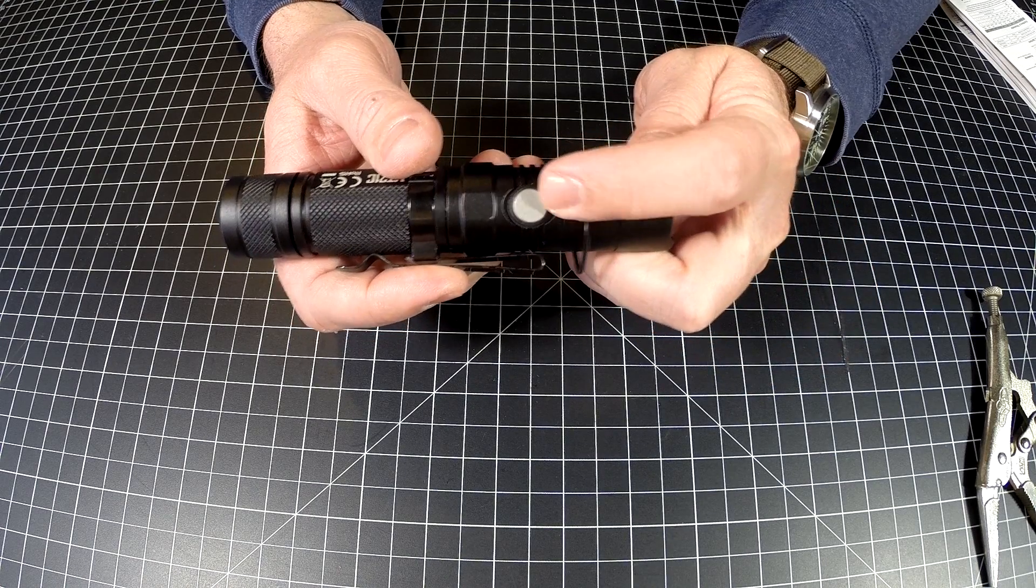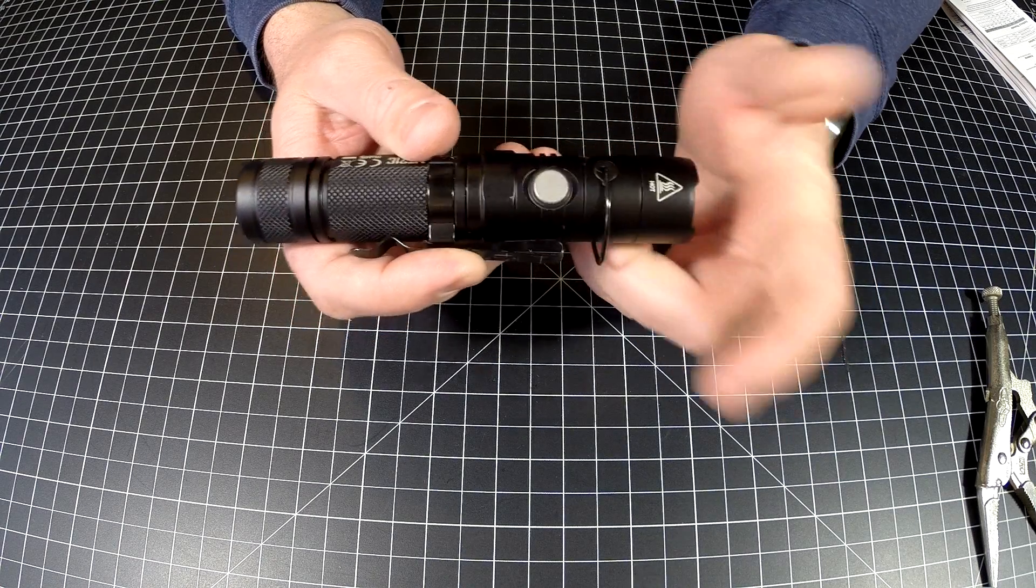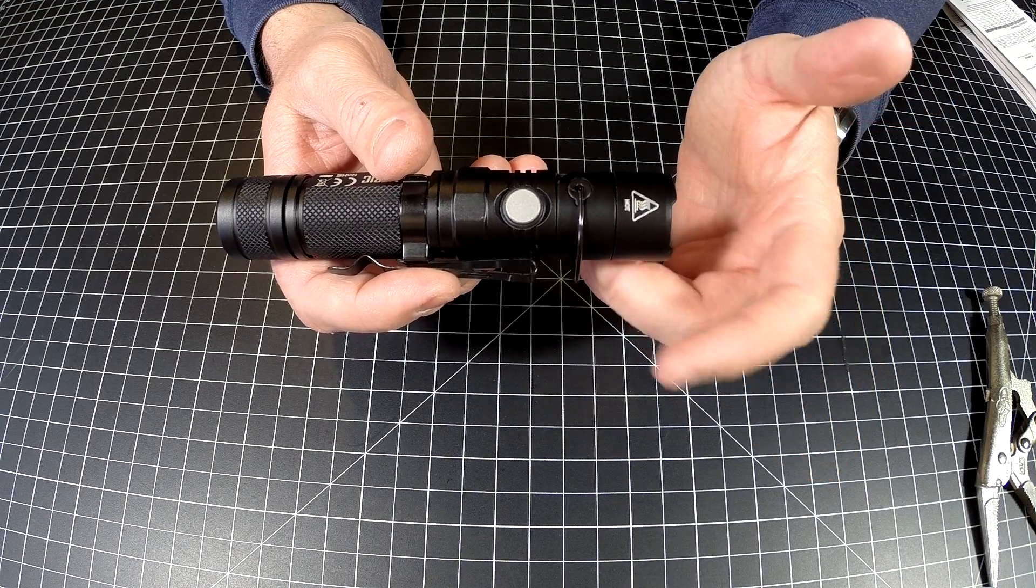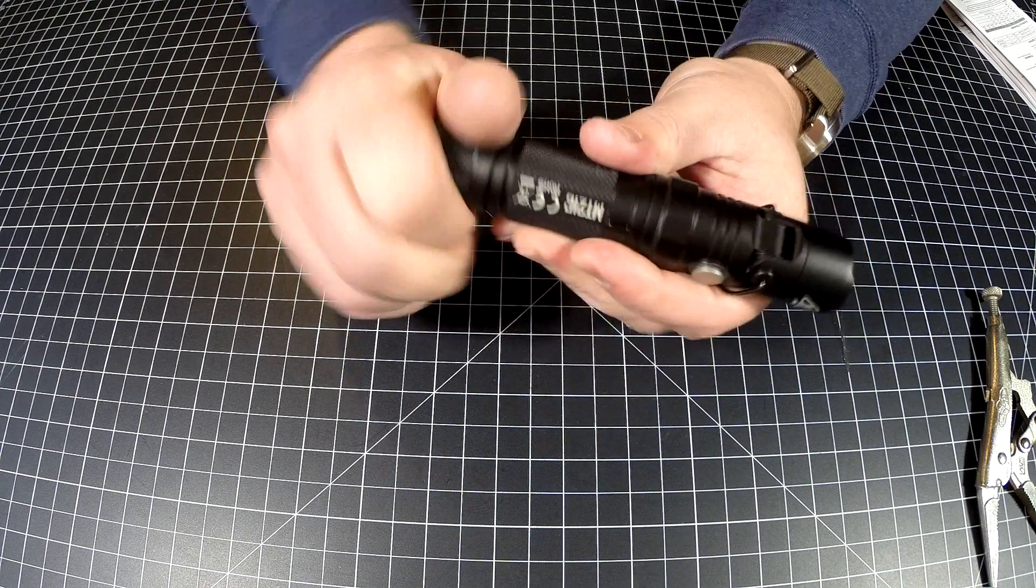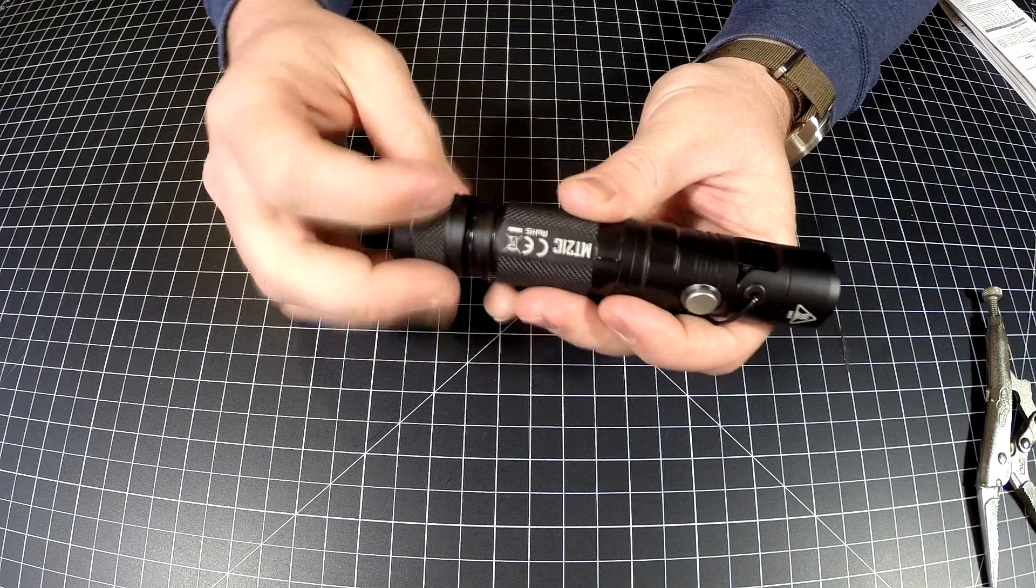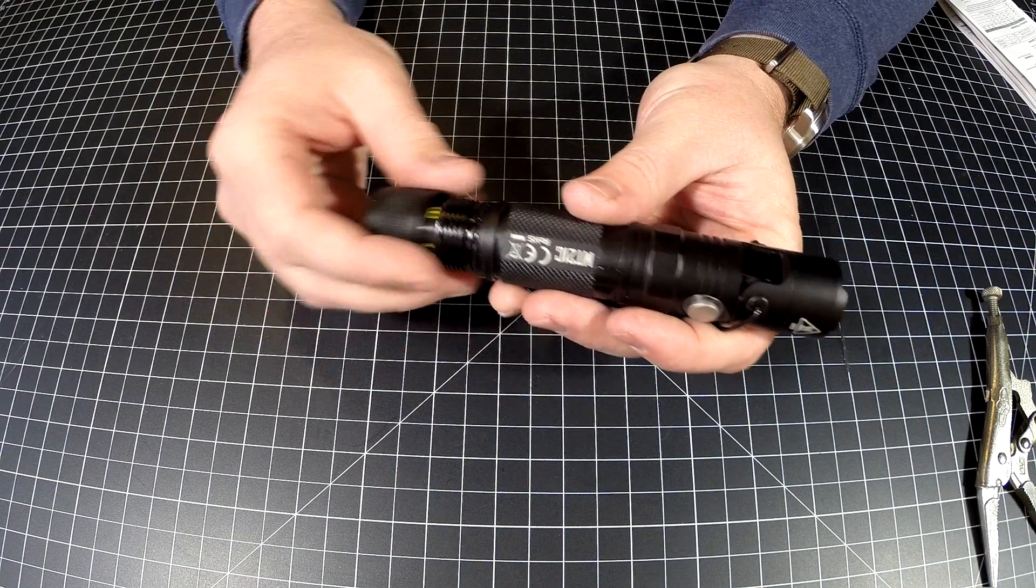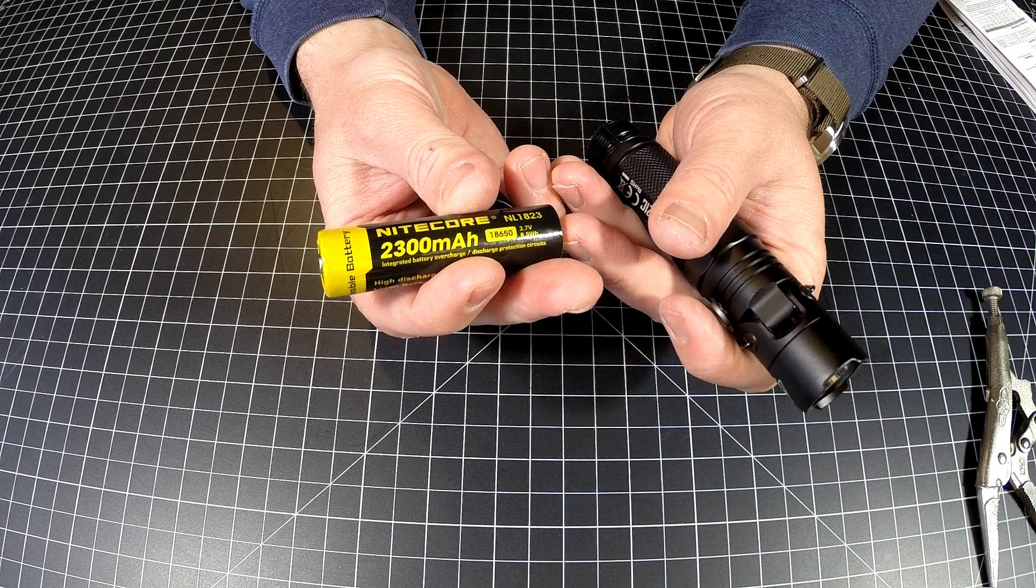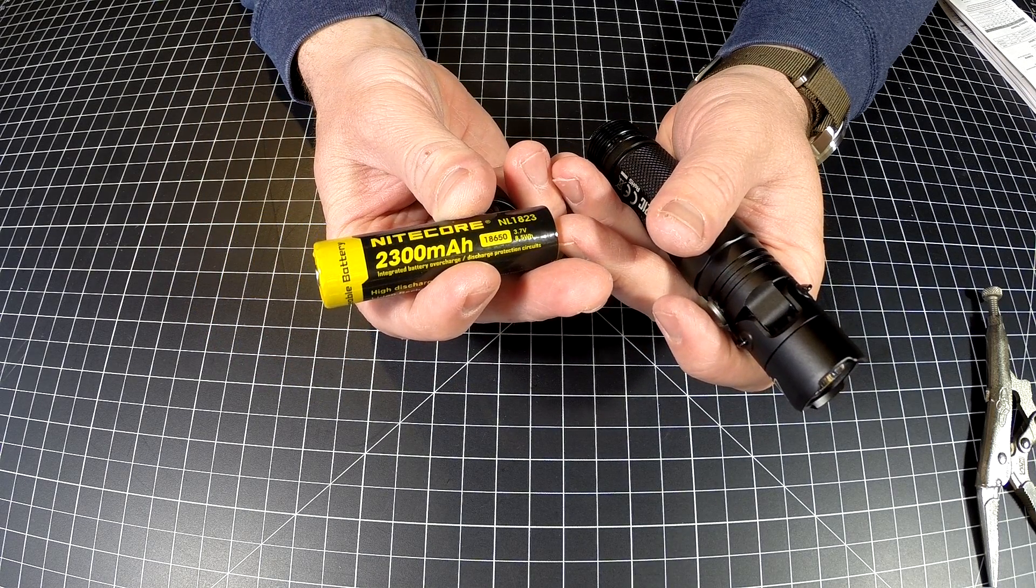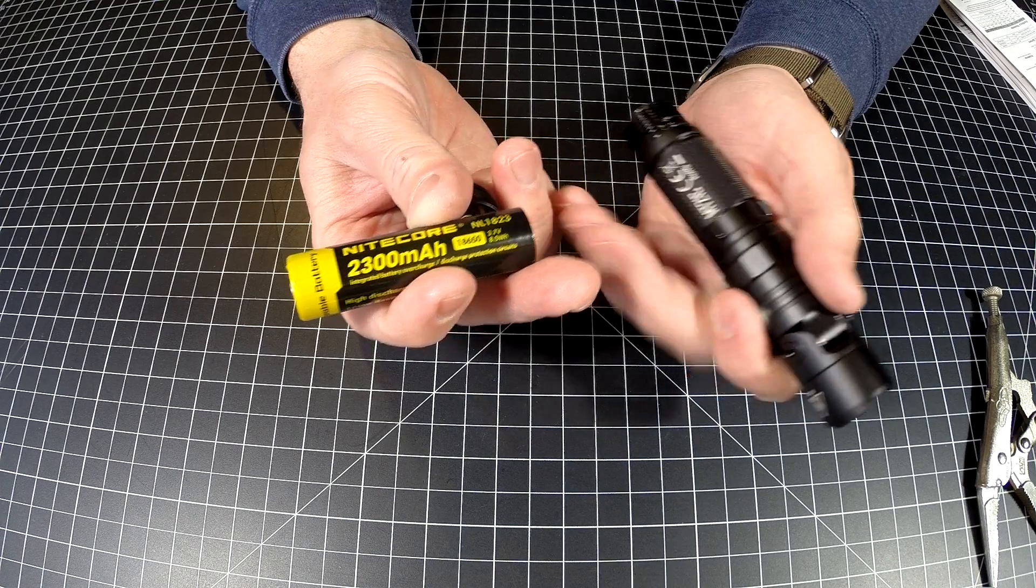Mine didn't come with a battery, so I tossed in my Nitecore 2300 milliamp hour 18650, 3.7 volt, 8.5 watt hours battery.